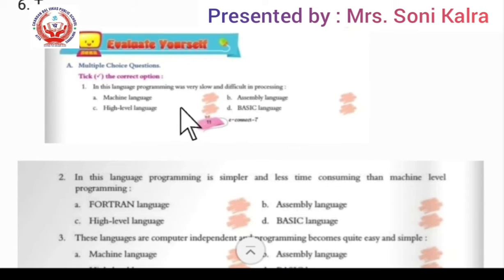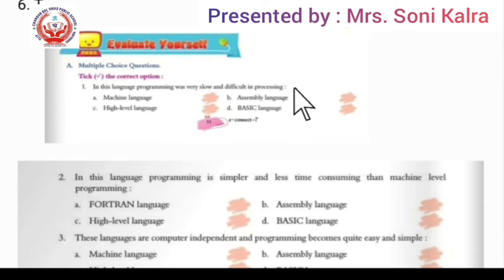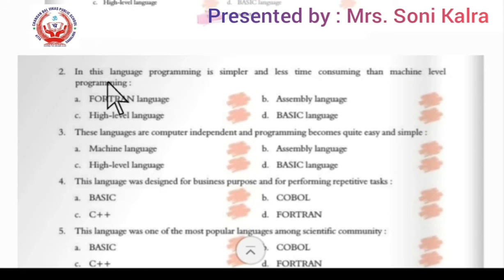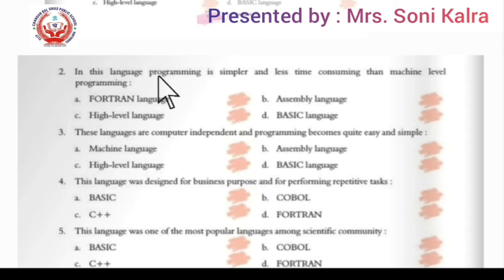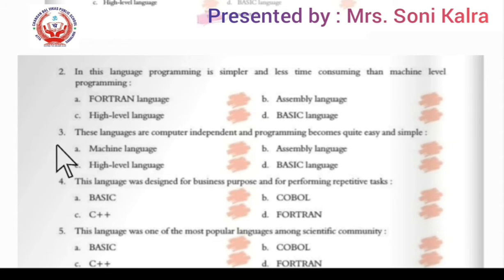MCQ: in this language, programming was very slow and difficult in processing — this language's programming was slow. Second: programming is less time consuming than machine level language programming — in this language programming was simpler and took less time compared to machine language. So the answer is assembly language.